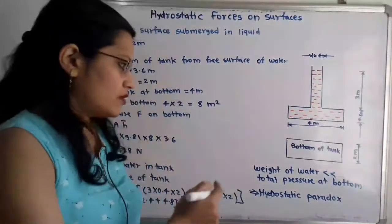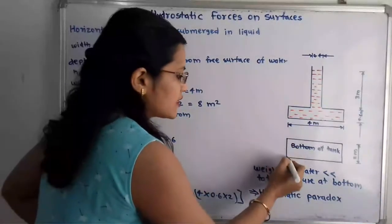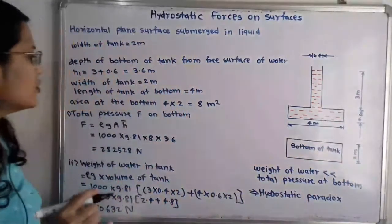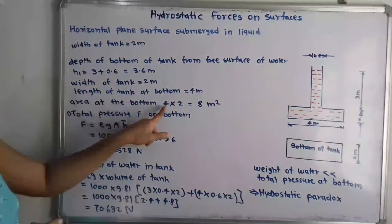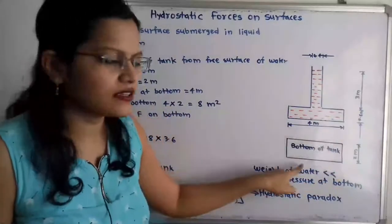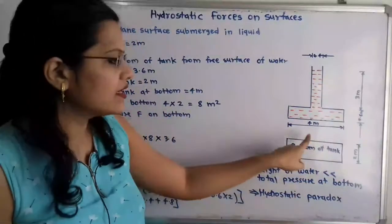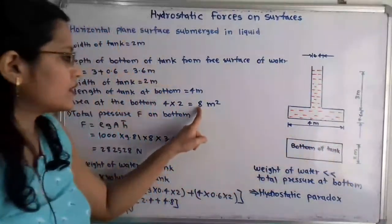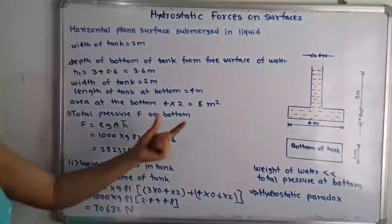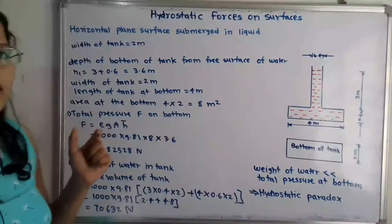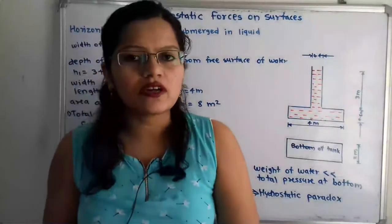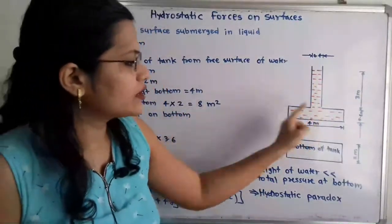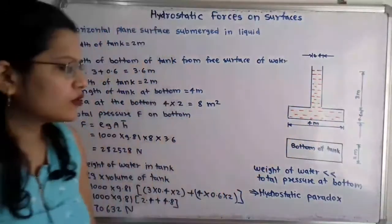Now, what is the area of the bottom? The cross-section of the bottom is rectangular, so area equals length multiplied by width — that is 4 multiplied by 2, which equals 8 square meters.